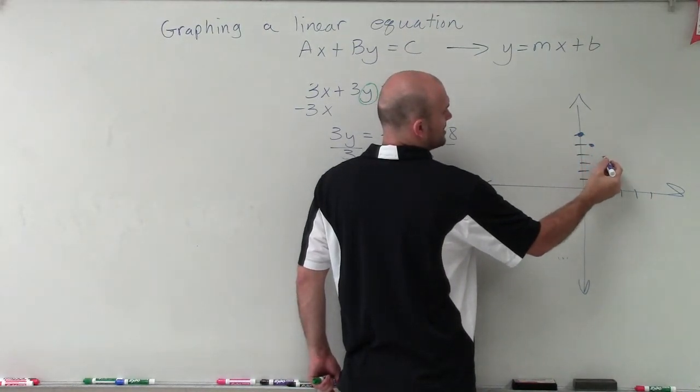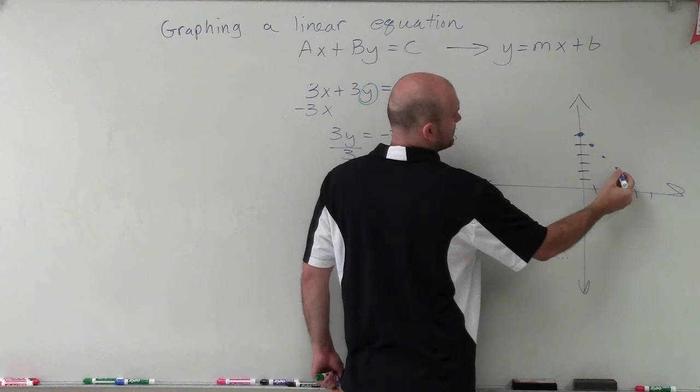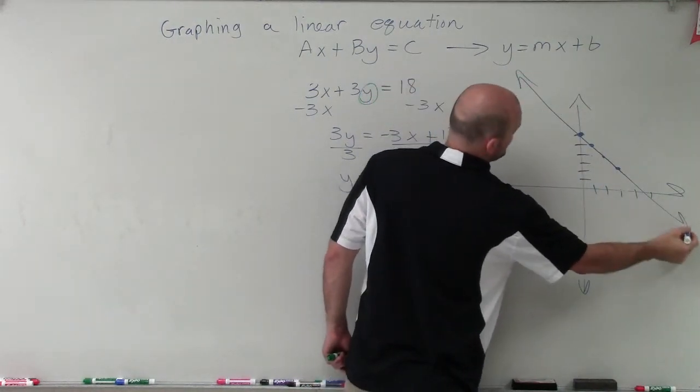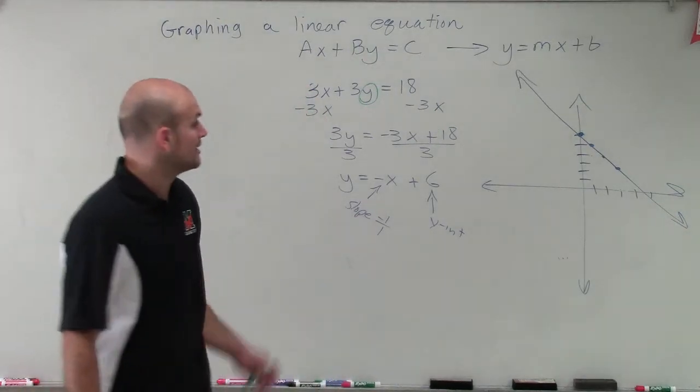Negative 1, positive 1. Negative 1, positive 1. So I can keep just following this pattern, but you really only need to do it twice to be able to determine what the shape of the graph is going to look like.